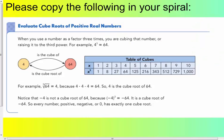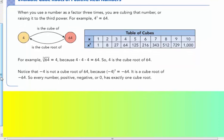Please copy the cubes into your table. When you use a number as a factor 3 times, you are cubing that number or raising it to the third power. For example, 4 to the third power — 4 times 4 times 4 — gives us 64. So 4 is the cube root of 64 and 64 is the cube of 4. In the radical symbol for cube root, you need to put a little 3 in the notch of the symbol. The cube root of 64 is 4.